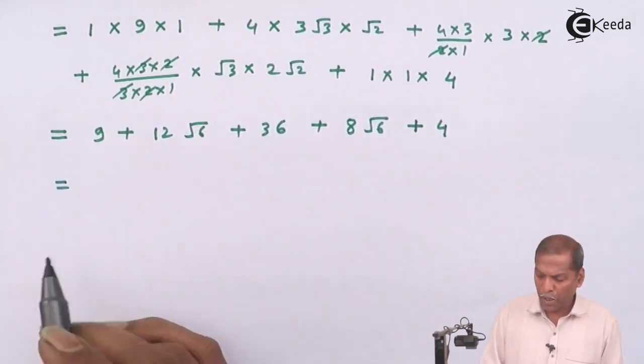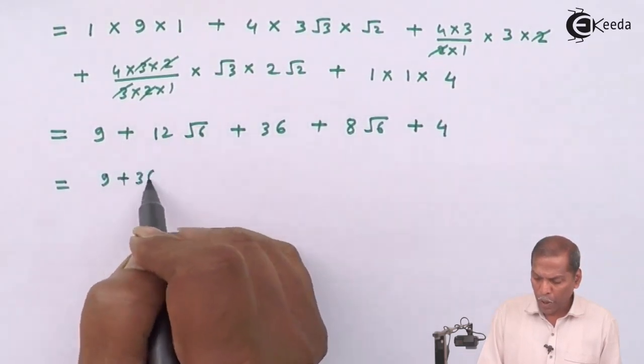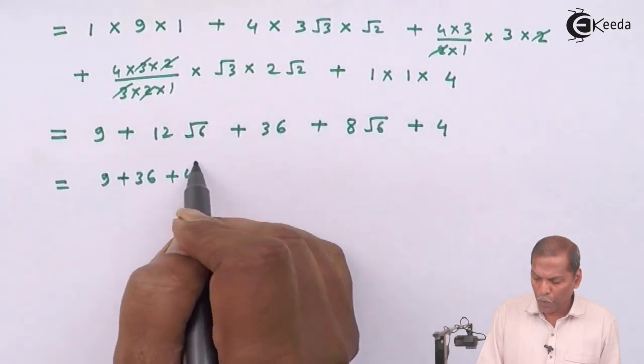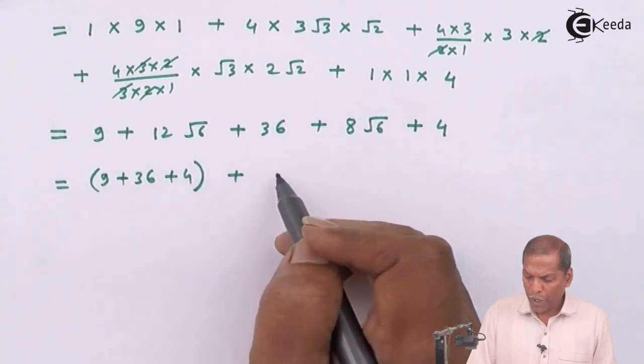And the last term plus 1 into 1 into 1 into 4 so that gives us 4. So that equal to now here we combine the terms as 9 plus 36 plus 4 in one bracket.